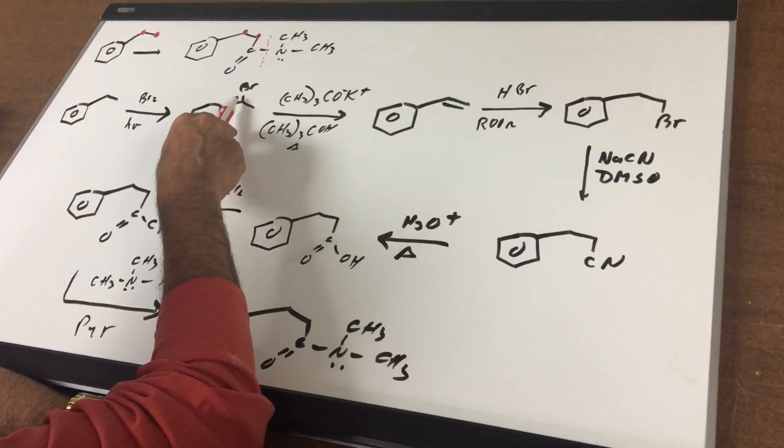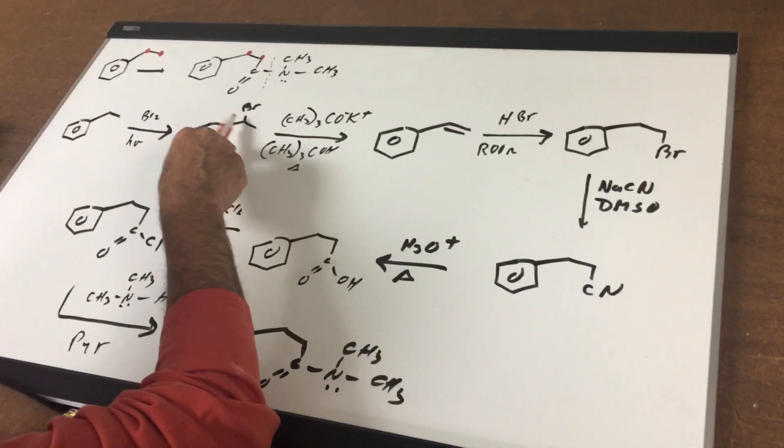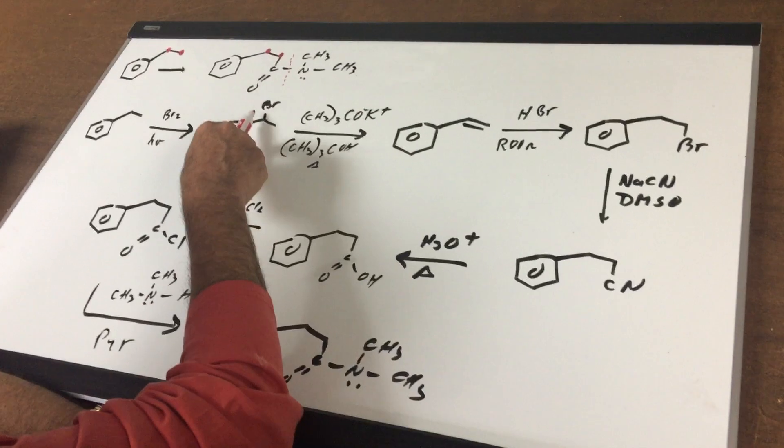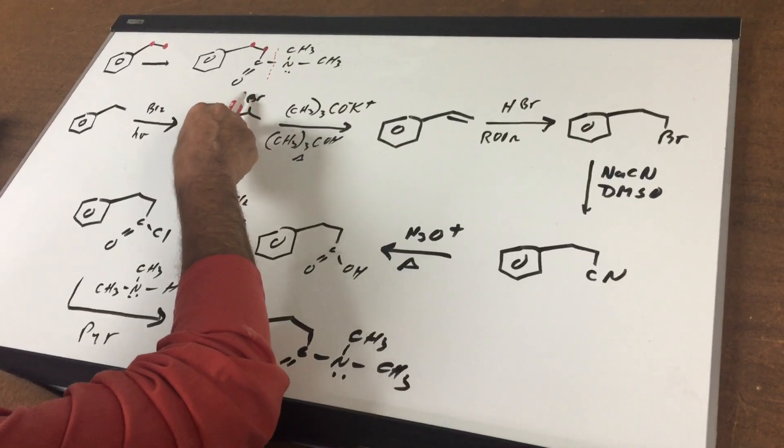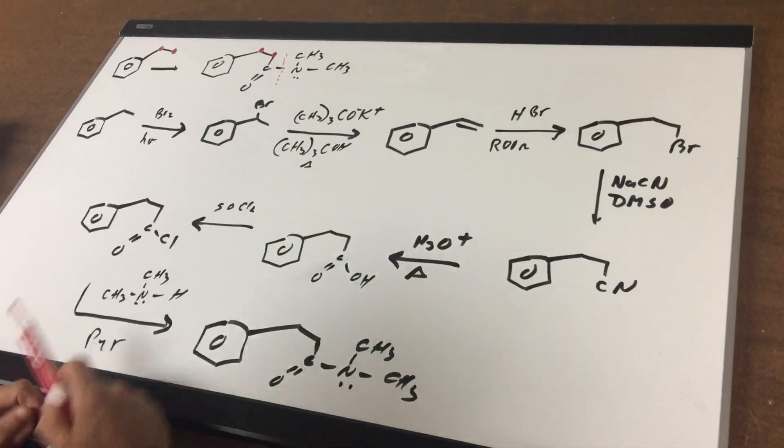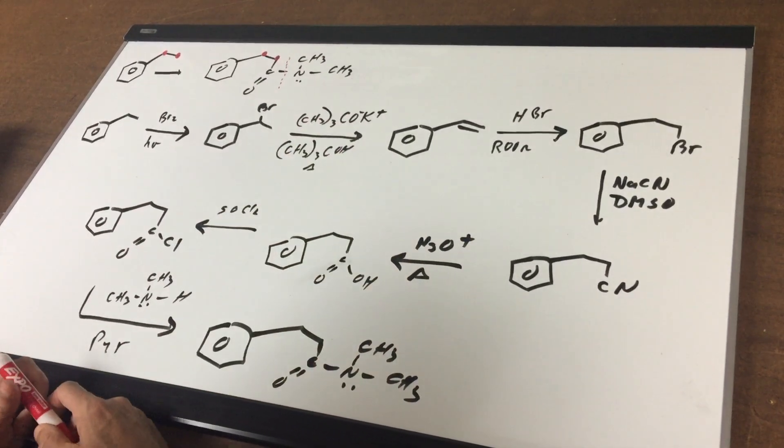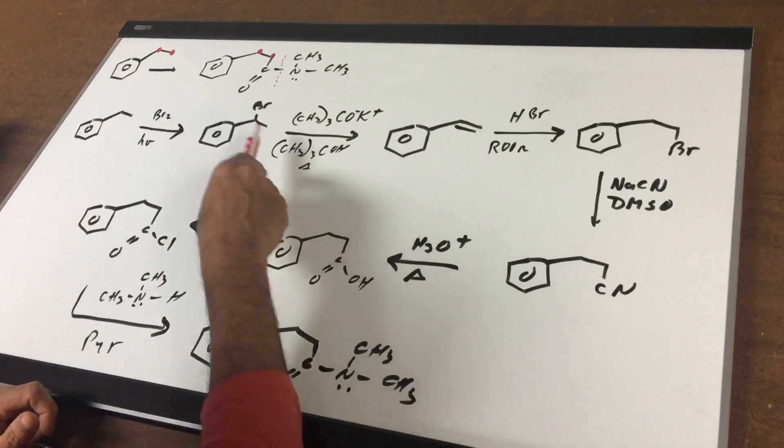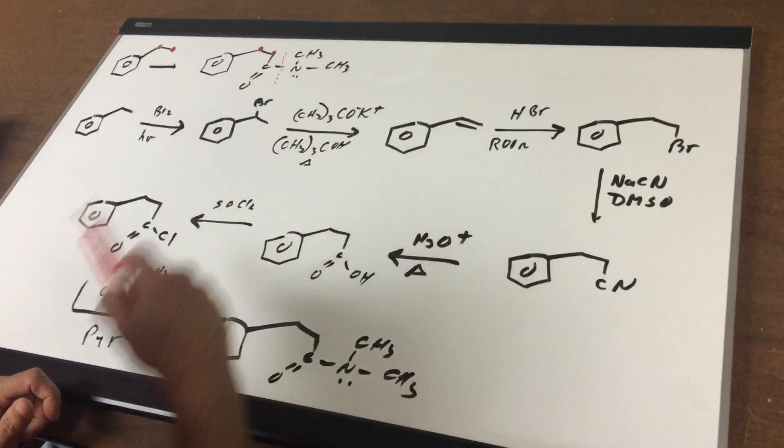What that's going to do is put the bromine on the first position where we abstracted a benzylic hydrogen and we now got a bromine. I then do the E2 reaction when I took potassium t-butoxide and t-butyl alcohol, and that gave me my E2 product.